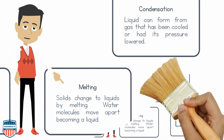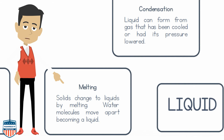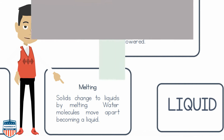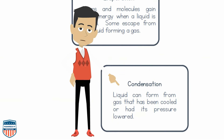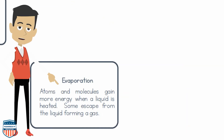Now let's talk about melting. Solids change to liquids by melting. Water molecules move apart, becoming a liquid. Now let's talk about condensation. Liquid can form from a gas that has been cooled or had its pressure lowered. Now let's talk about evaporation. Atoms and molecules gain more energy when a liquid is heated. Some escape from the liquid, forming a gas.